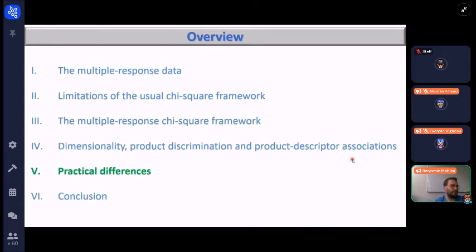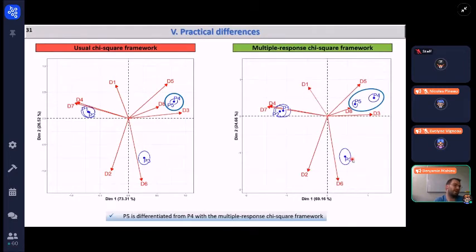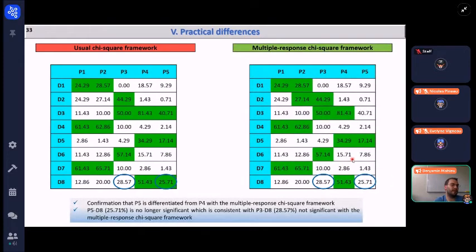So now from a practical point of view, are we solving the problem we were looking for? The answer is yes, because now on the same example we can see that on the right, P5 is differentiated from P4 with the multiple response chi-square framework, which is logical. And because P5 has been constructed from P4, you can see that it deviates from the null model in the same direction, but to a lesser extent because it has less proportion of citations for each descriptor. And also we can see here that on the left, P5 and P4 were not differentiated, but they are now in the multiple response chi-square framework. And also now the 28 percent is not highlighted, but now the 25 is not highlighted either, which is consistent and logical.